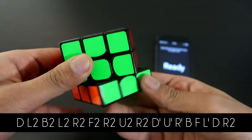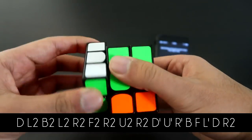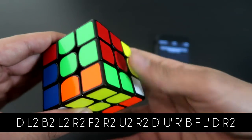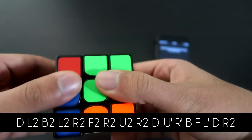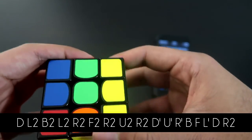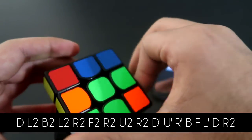So to scramble the cube, we're going to use the algorithm: down, left, left, back, back, left, left, right, right, front, front.